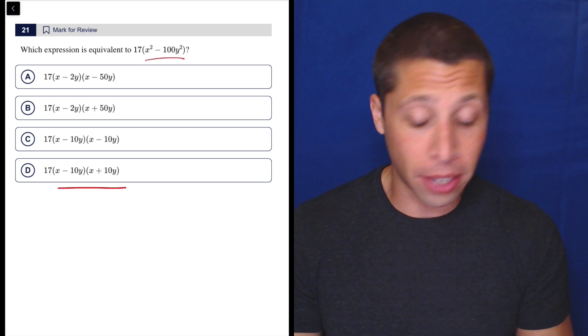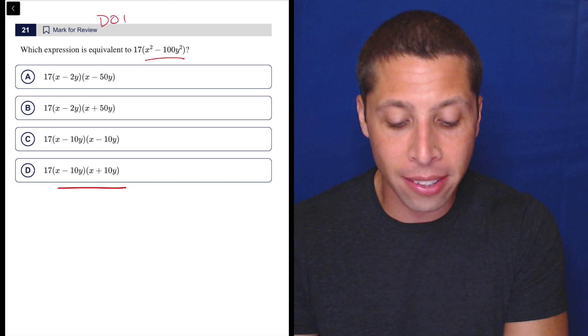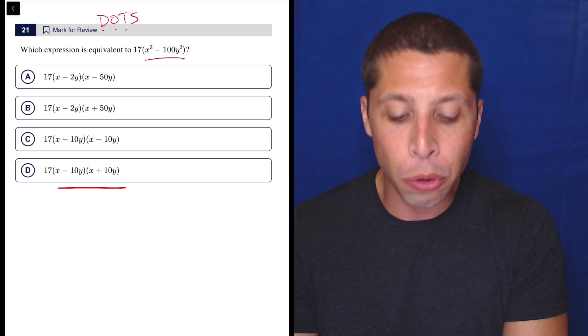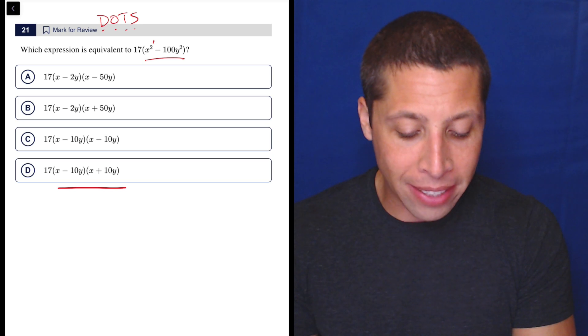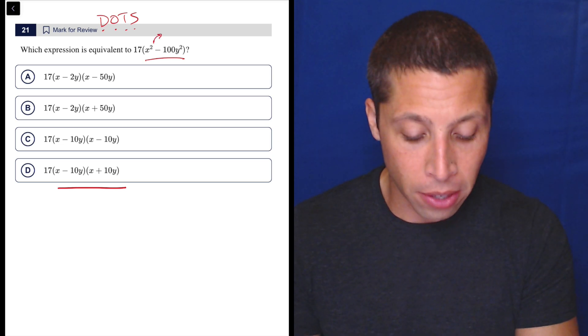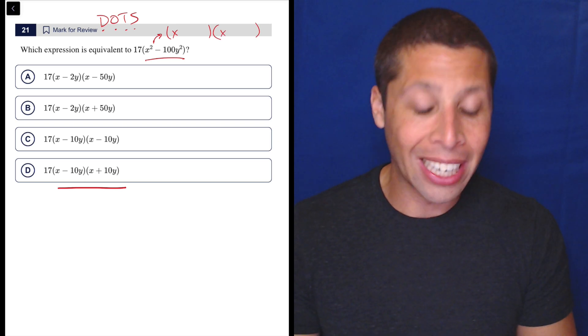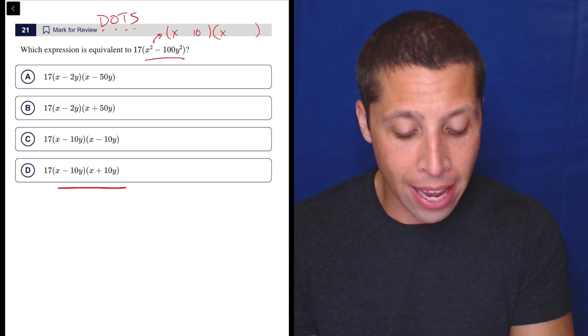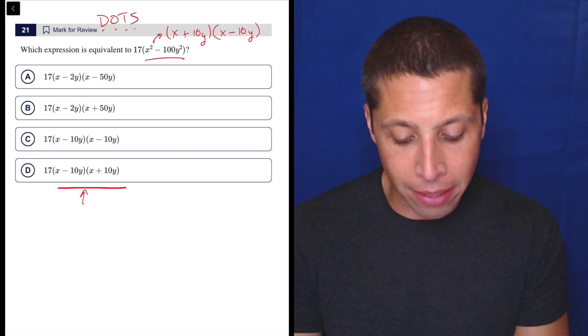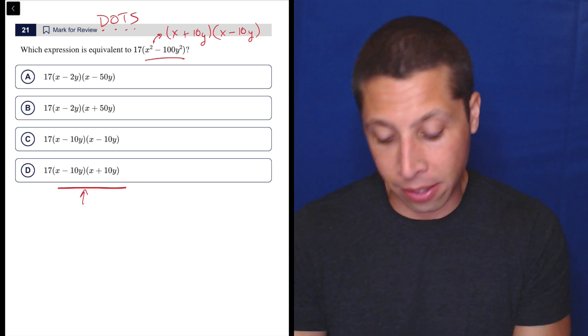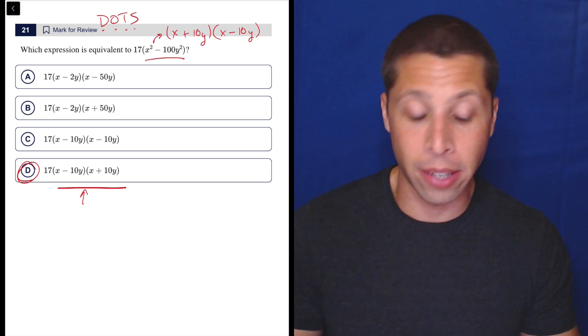But basically, this is a weird kind of factoring known as DOTS, difference of two squares. So the formula for that is we split that by taking kind of the square root of each piece. So the square root of x squared is x, the square root of 100y squared is 10y, and then one of these is a plus, one of these is a minus. So I wrote it backwards, but that's kind of what we have right here. And so the 17 is just going to hang out front, it doesn't really matter.